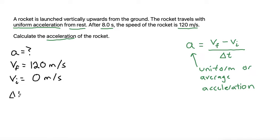Our change in time is like the duration of travel, which is, it says it travels for 8.0 seconds. So that would be our delta t, our change in time. This triangle looking symbol is the Greek letter delta, meaning change in.